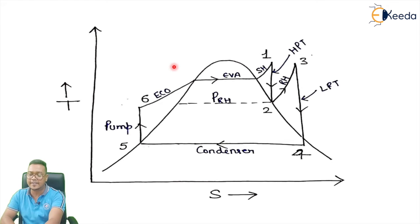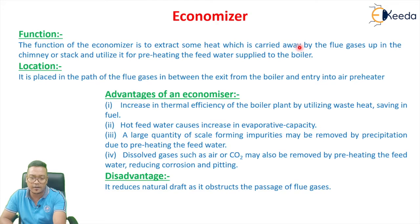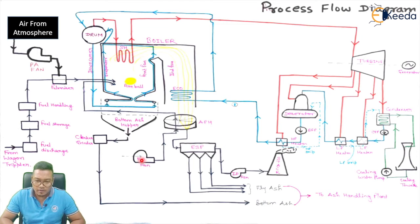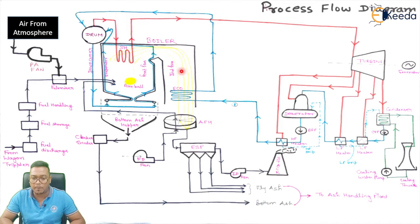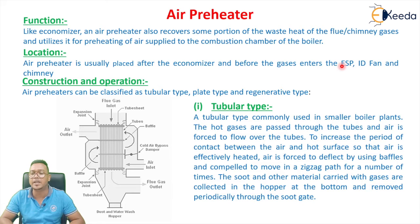Now let's see the next boiler auxiliary — the air preheater. Like the economizer, an air preheater also recovers some portion of the waste heat of the flue gas and utilizes it for preheating the air supplied to the combustion chamber of a boiler. In this diagram, the air preheater takes heat from the flue gas, and this heated air goes into the combustion chamber. The air preheater is usually placed after the economizer and before the gas entering into the ESP, ID fan, and chimney.